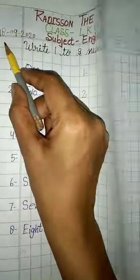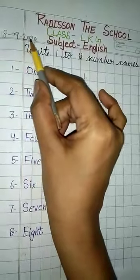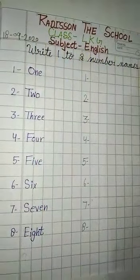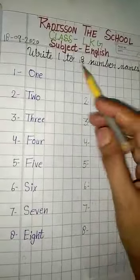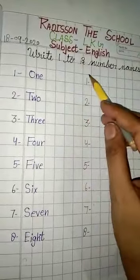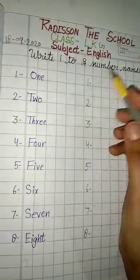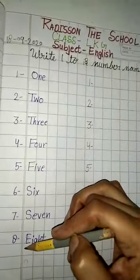First of all, write here date 18-9-2020 and write here CW. Write 1-8 number names. Okay, number names. You have to complete 1-8 numbers.